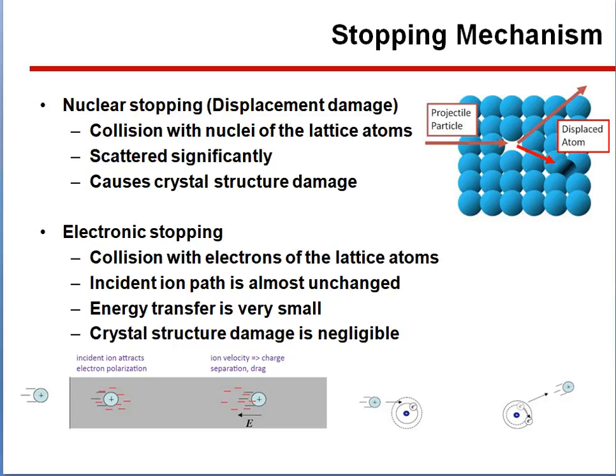Electronic stopping is collision with electrons of the lattice atoms. Its incident ion path is almost unchanged, its energy transfer is very small, and its crystal structure damage is negligible.